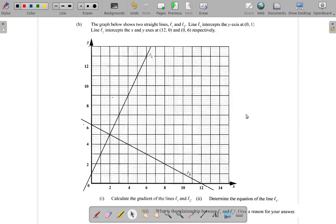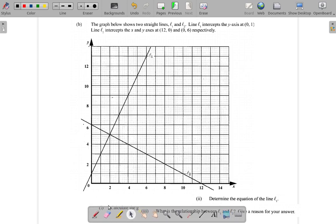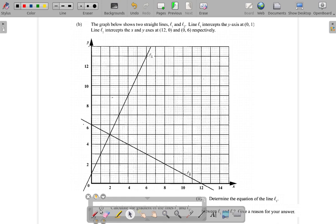Alright, so we're at 4b of the May 2017 paper. The graph below shows two lines, L1 and L2. Let me make sure I have everything set up here - L1 here and L2 here. It says line L1 intercepts L2.